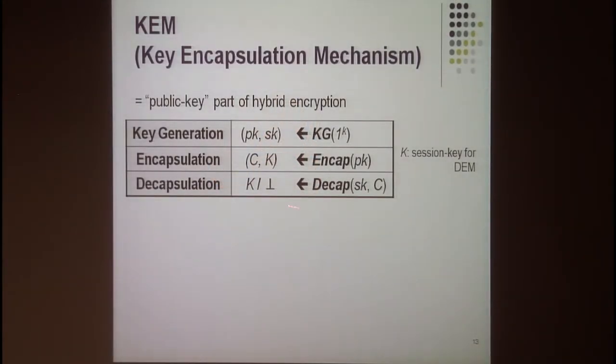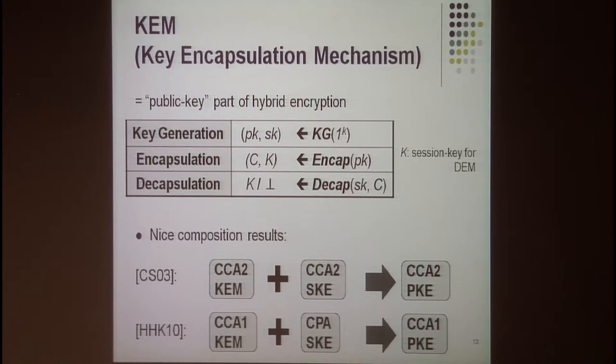I go on to the toy version of our main construction, which is only CCA1-secure. First, a brief recall of what a key encapsulation mechanism (KEM) is — it is the public-key part of hybrid encryption, consisting of three algorithms. Unlike encryption, the encapsulation algorithm does not take a message as input; instead it outputs a random string, and decapsulation recovers that string. There is a very nice composition result: if we have a CCA-secure KEM and CCA-secure symmetric encryption, we achieve CCA-secure public encryption. For CCA1 security, we can use a CCA1-secure KEM with only CPA-secure symmetric encryption. So to achieve public encryption, we only need to focus on KEMs.